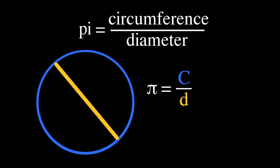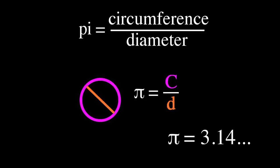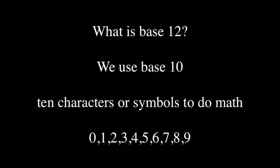Pi is the ratio of a circle's circumference divided by its diameter. No matter how big your circle is, the ratio is always the same. It's about 3.14, but there are different ways to express this value. We use base 10, which means we have 10 symbols or characters to do math — 0 through 9. But you could use any number of symbols.